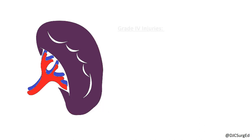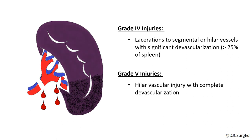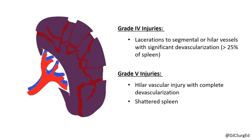Grade 4 injuries include lacerations involving segmental or hilar vessels producing major devascularization, whereas Grade 5 injuries include hilar injuries devascularizing the spleen and shattered spleens.